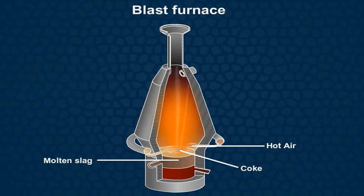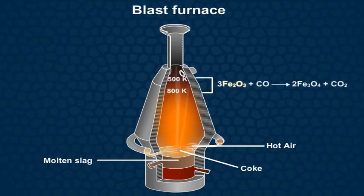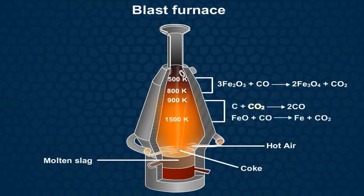Here, as you can see, at temperatures of 500 to 800 K, the Fe₂O₃ gets reduced to form Fe₃O₄. Further, at high temperatures of about 900 to 1500 K, the carbon dioxide is reduced to carbon monoxide and iron oxide is reduced to iron.